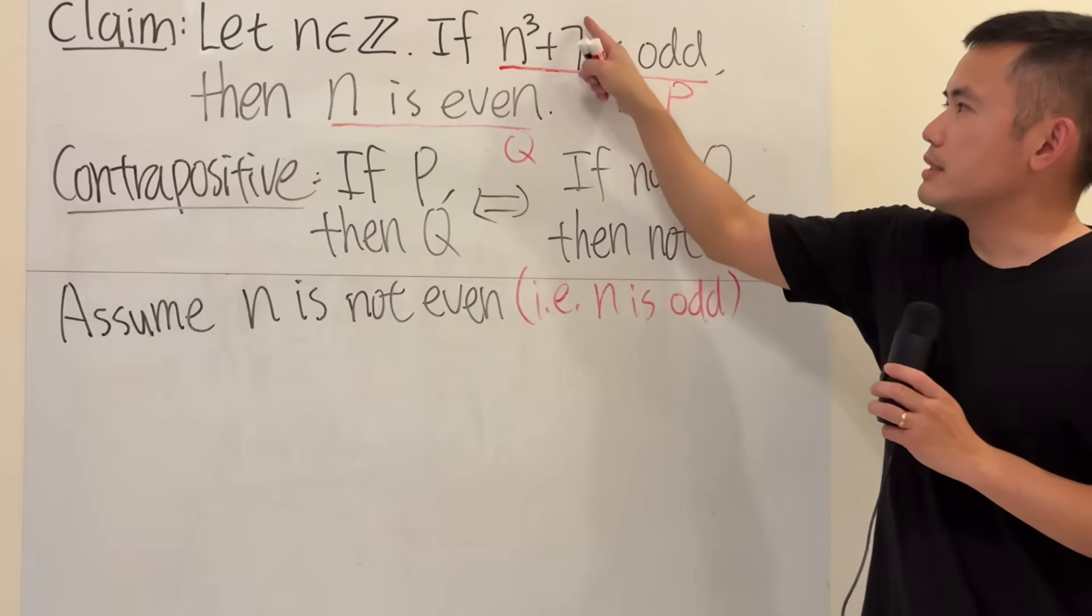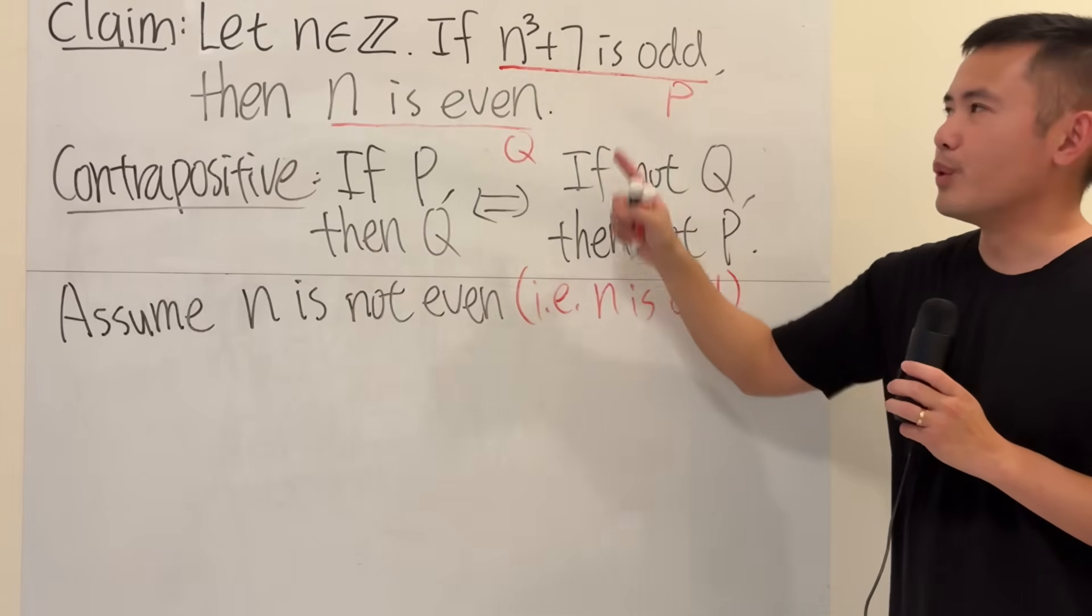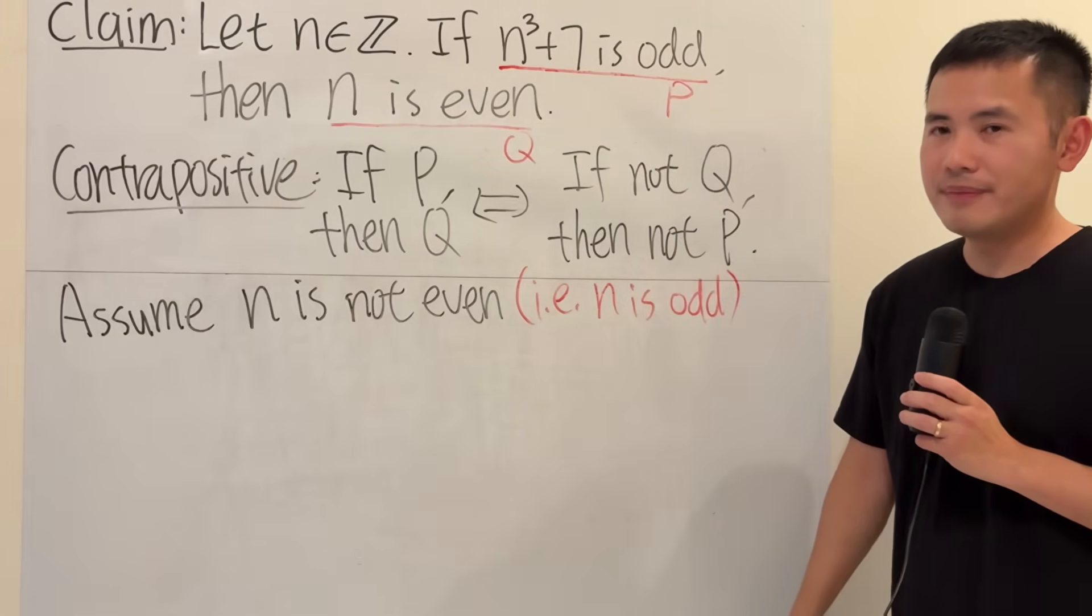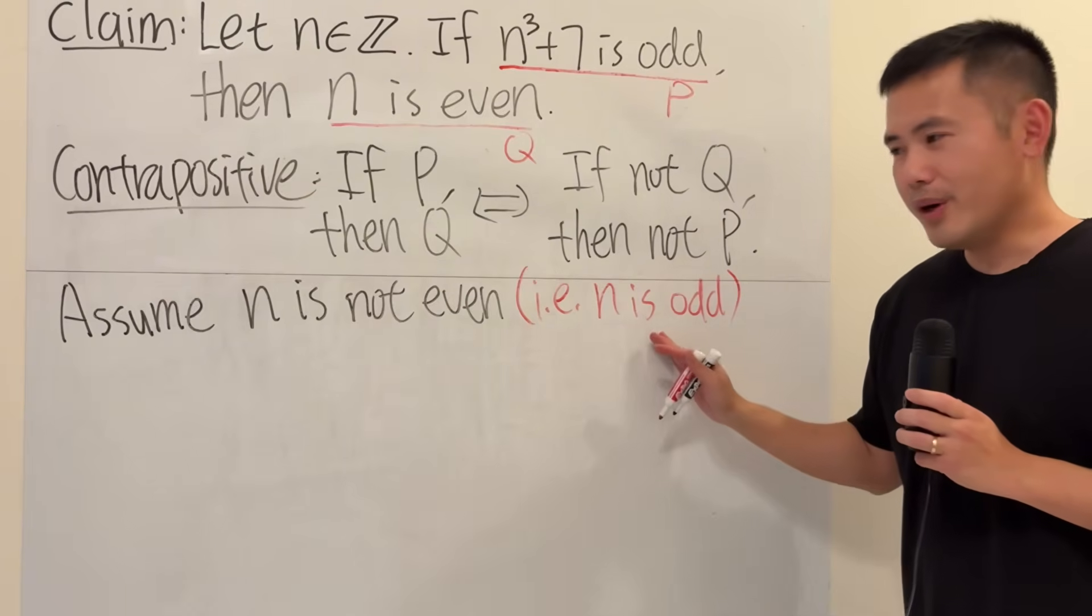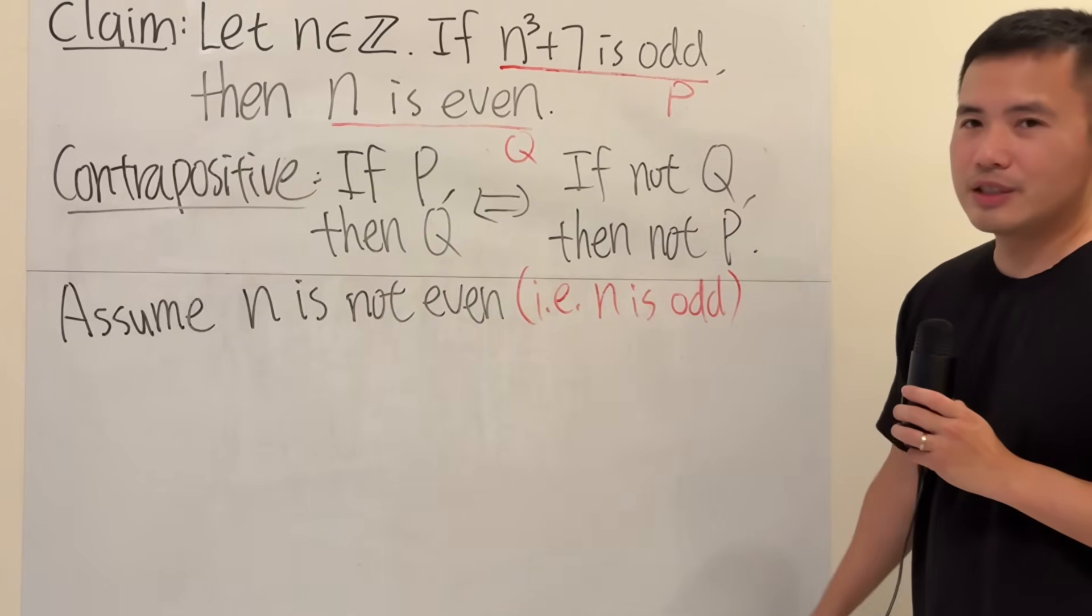So, we are trying to show this is not odd. In another word, this is even. So, how can we do it? Well, we know that n is odd, so we can do the following.